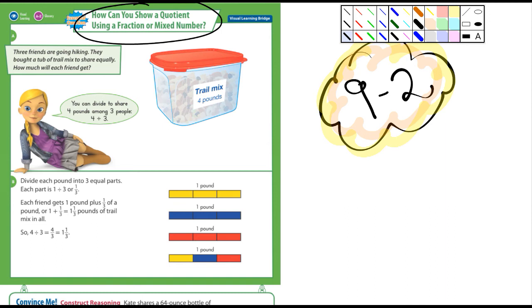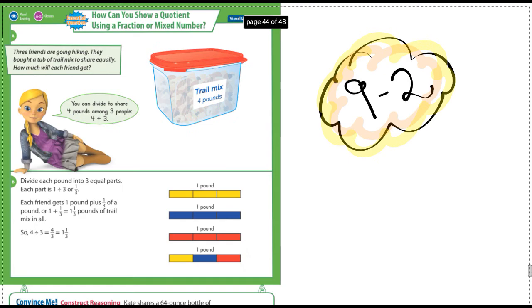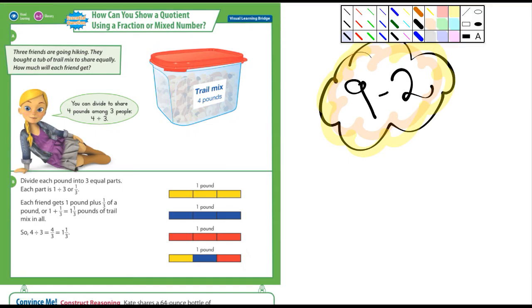So, let's see here. Three friends are going hiking and they bought a tub of trail mix to share equally. How much will each friend get? Well, how much trail mix is there? There's four pounds. So the four pounds is going to be divided by three, and they've got that there, four divided by three, and also I could write it as four divided by three, or four over three.